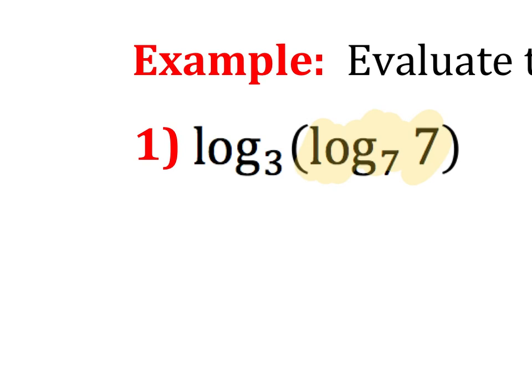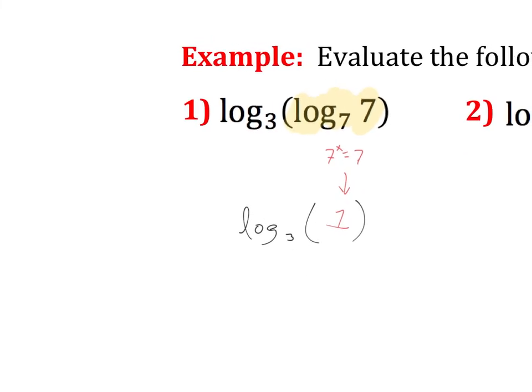So number one, I need to first figure out 7 to what power is 7. Well, that's just 1. So this is now log base 3 of 1. Well, we already discussed if 1 is my argument, then this is automatically 0. Because 3 to the 0 power is 1. Anything to the 0 power is 1.